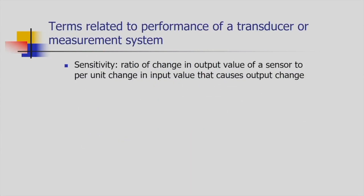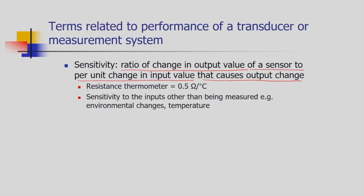The next performance-related term of a transducer is sensitivity. It is defined as the ratio of change in output value of a sensor per unit change in input value that causes the output change. For example, in a resistance thermometer, if there is a change of 1 degree Celsius in the environment and the instrument gives an output change of 0.5 ohm, that is called the sensitivity.